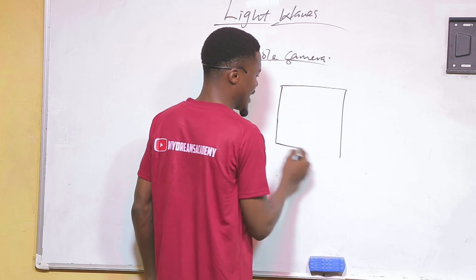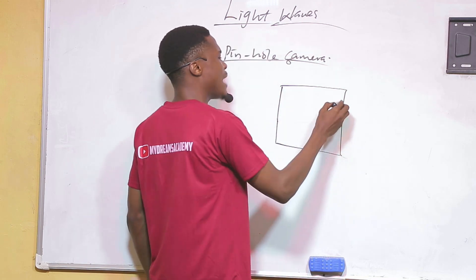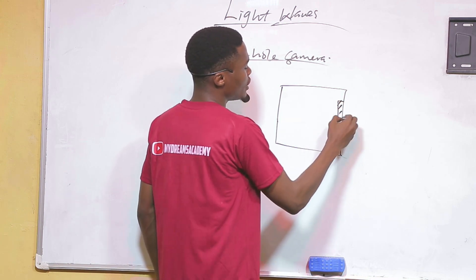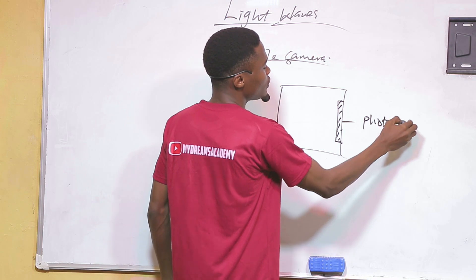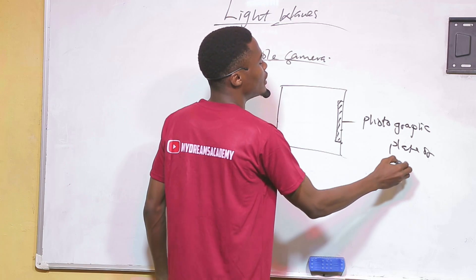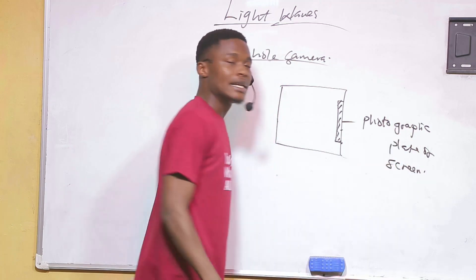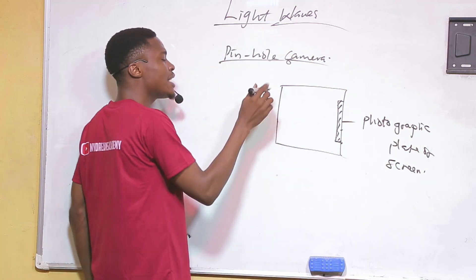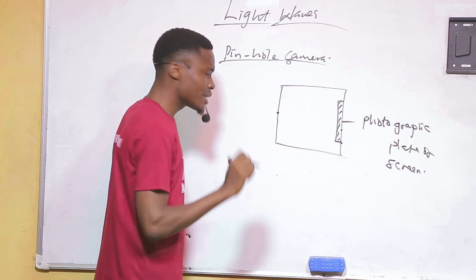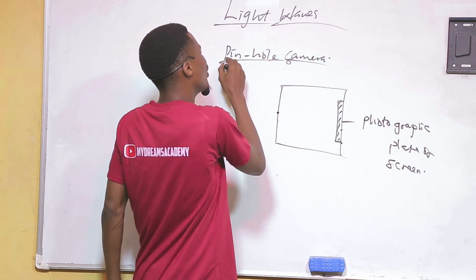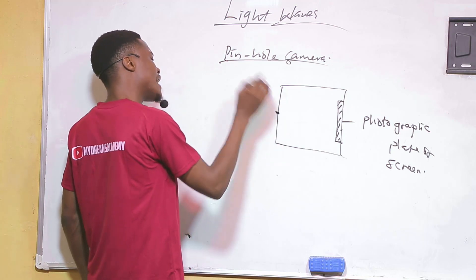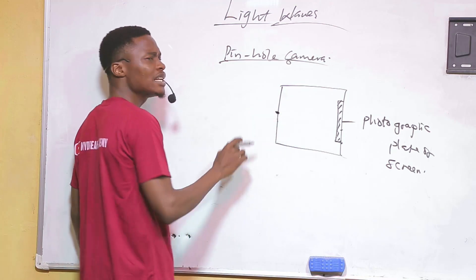To make a simple pinhole camera, you get a box or a carton. At the back of that box you put a photographic plate or a screen. Then you use a pin and create a tiny hole on that box — that is why it is called a pinhole camera.